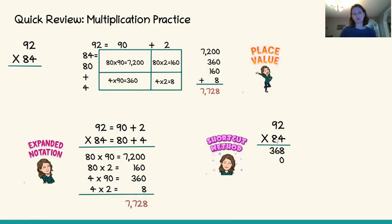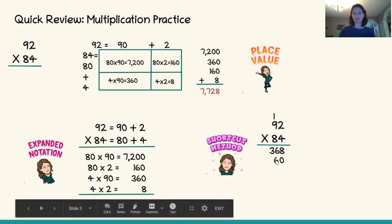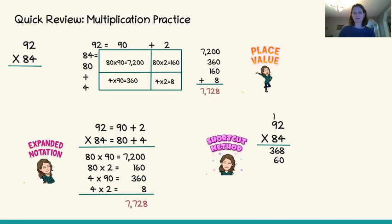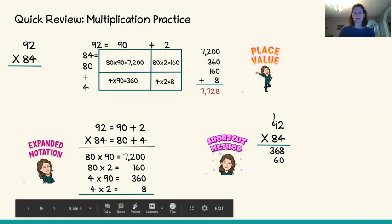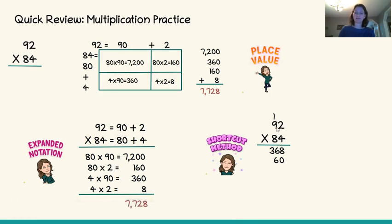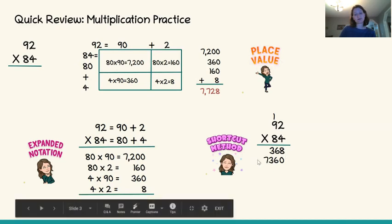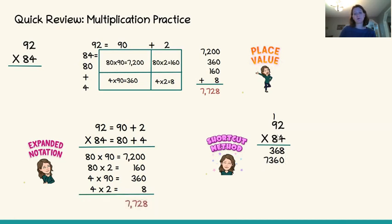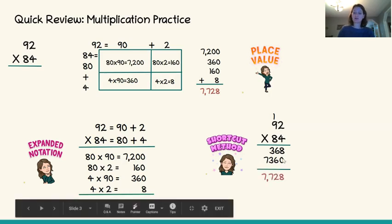I put a zero here to remind me that I'm starting in the tens place, filling the ones place with zero. Now 8 times 2 — or really 80 times 2 — is 16: I put the 6 in the tens place because it's really 6 tens, and carry the 1. Then 8 times 9 is 72, but we add the carried 1, giving 73. This row records what we multiplied by the tens digit. Then we add the partial products to get our final solution.